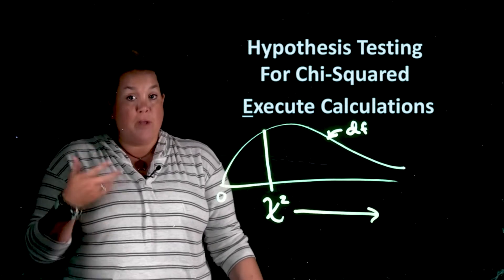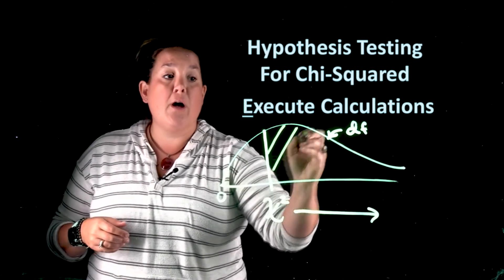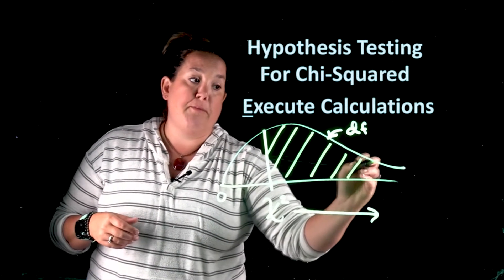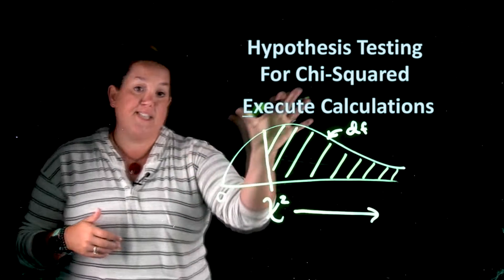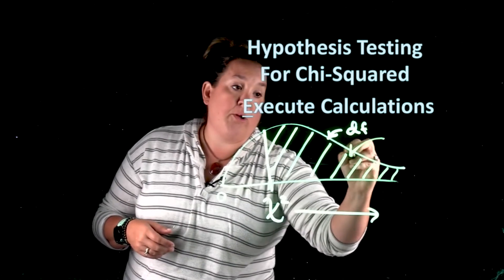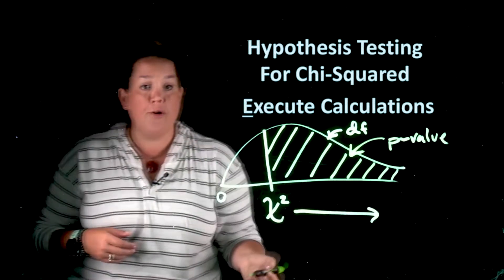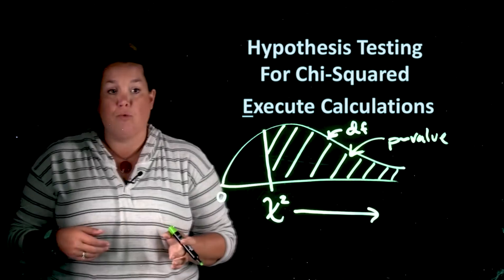Now the other thing, a p-value is the probability. With these curves, area equates to probability. So that means this is the area or probability we're interested in when we're looking for our p-value. So essentially the p-value is the area underneath the curve that is to the right of the chi-squared.